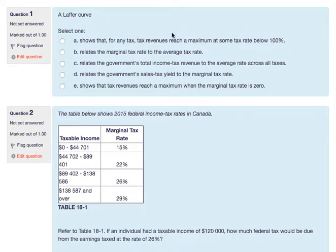Tax revenue goes up and then starts going back down, because if the tax rate were to go to 100 percent, tax revenue would be very small or likely zero. If you're completely taking away everyone's money from what they earn, most people would just not work legally and would work in the black market. So you'd have a tax revenue of zero. The idea is that there is a tax rate that leads to maximum tax revenue — revenues reach a maximum at some rate below 100 percent. That's pretty much what the Laffer curve shows.